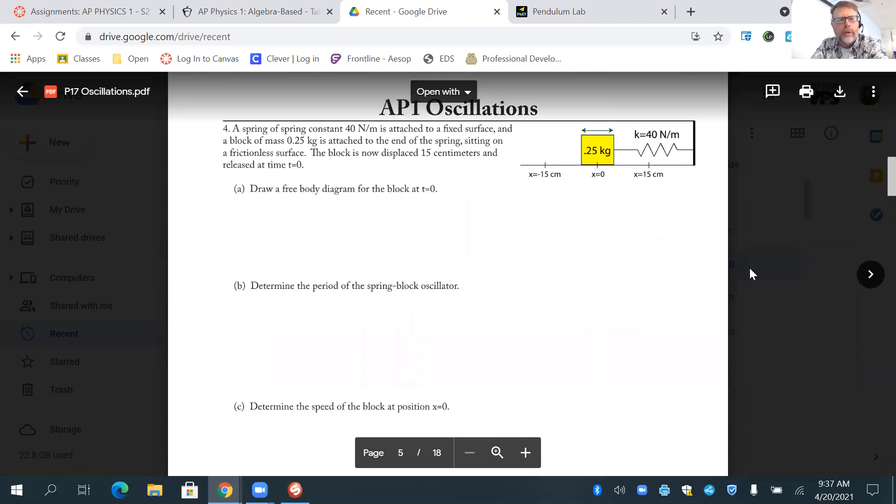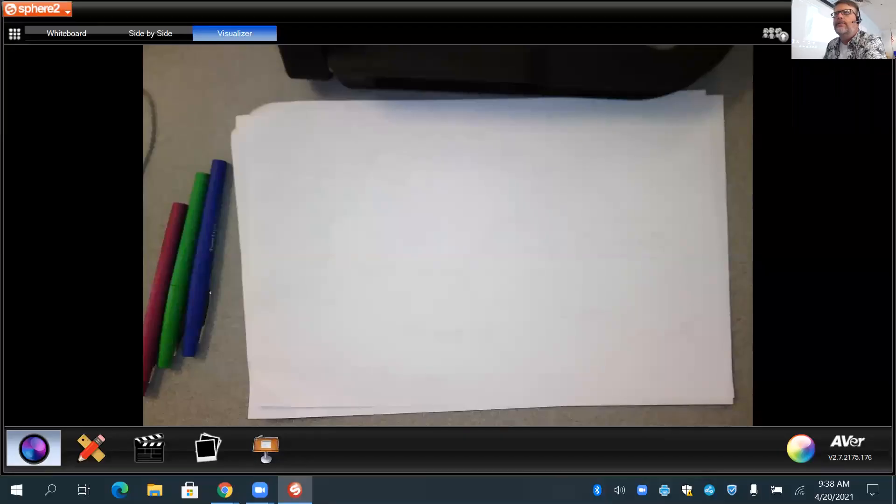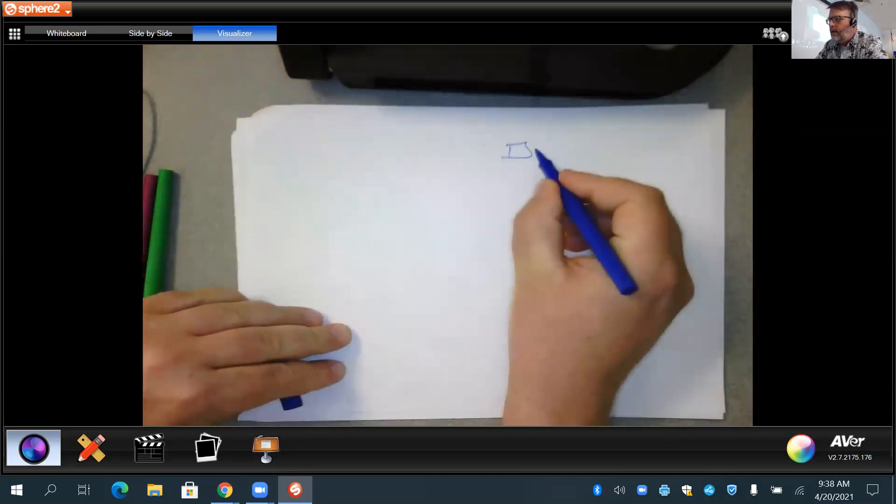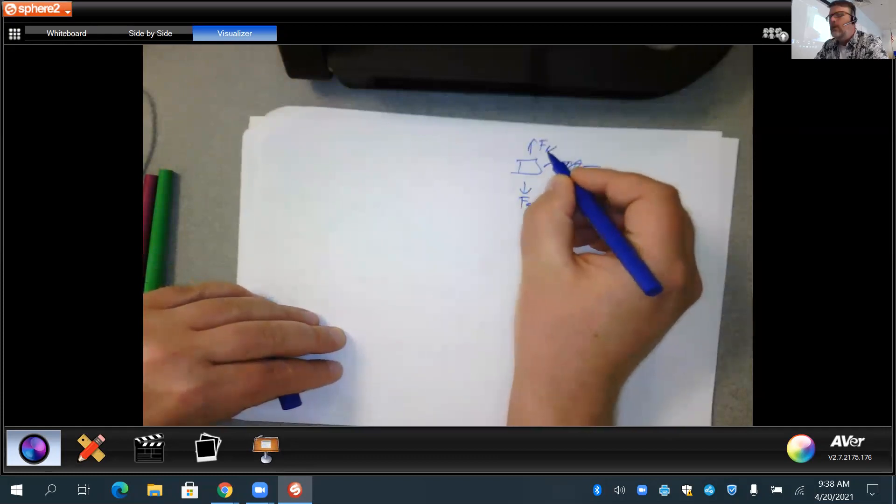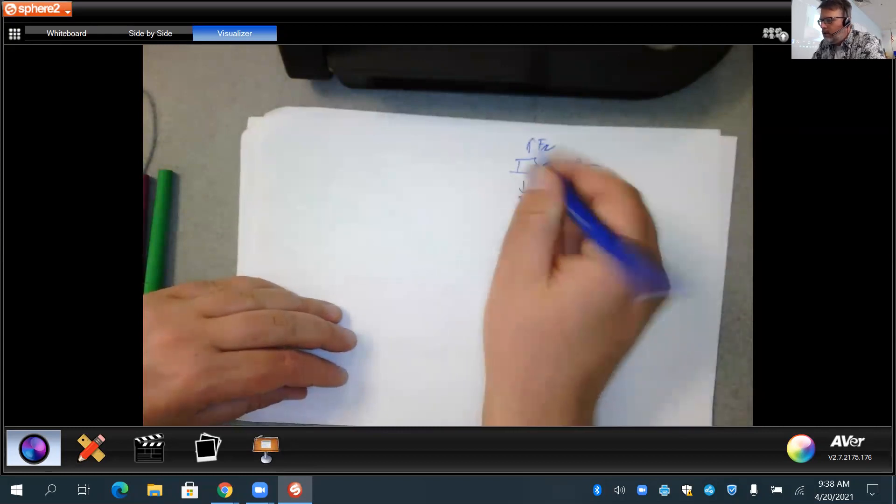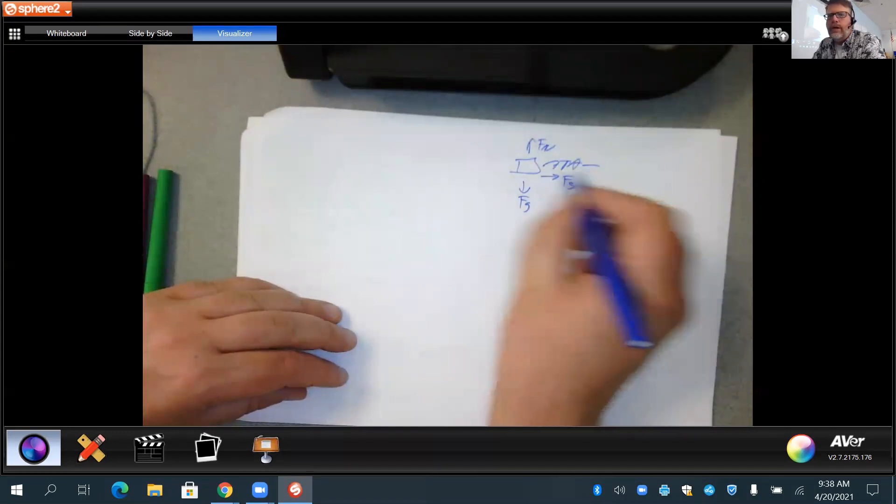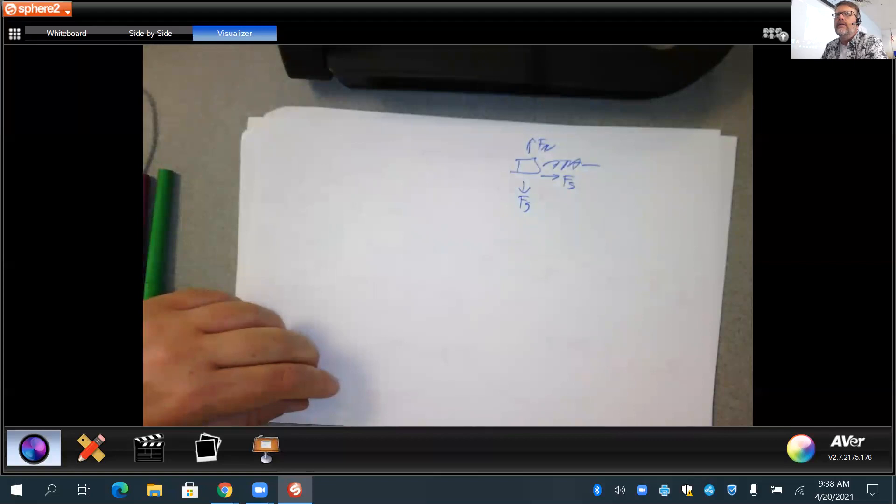All right. Number four, horizontal spring, draw a free-body diagram. Determine the period of the spring block oscillator and determine the speed of the block. So notice number three didn't ask for a free-body diagram, but I drew one anyway to help my problem solving. This one explicitly asked for one. So we'll go ahead and do that. All right. So draw a free-body diagram here. So we have our mass and our spring. So we're going to have force of gravity, force normal. Here we're looking at, does it say a frictionless surface? Yes, it does say frictionless. We're not going to worry about friction, which means these two should cancel out, and then we'll have force of the spring moving back and forth. Those are free-body diagram.